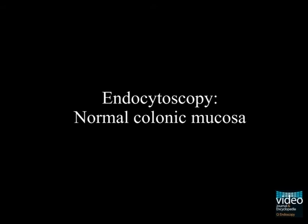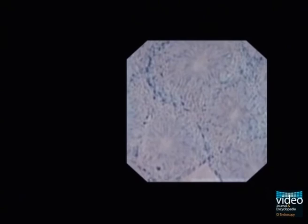Endocytoscopy performed on normal colonic mucosa reveals uniform appearing glands which are regularly arranged. Each gland is lined by epithelium which is arranged in a radial fashion.